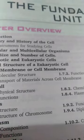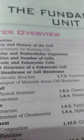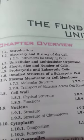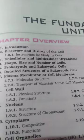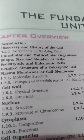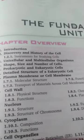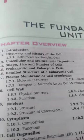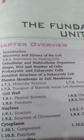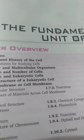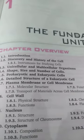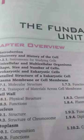Let us recapitulate the points we have studied in the previous session. In the previous session, we have learned about the introduction, the discovery and history of the cell, unicellular and multicellular organisms, shape, size and number of cells, prokaryotic cell, eukaryotic cell, and detailed structures of prokaryotic and eukaryotic cell. The basic components — the plasma membrane or cell membrane, cytoplasm and the nucleus — were also discussed.